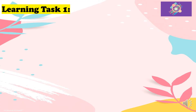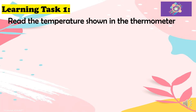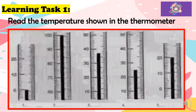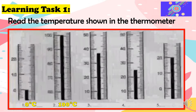For learning task 1, read the temperature shown in each thermometer. We have 5 items. For number 1, it shows 0 degrees Celsius. For number 2, the temperature is 100 degrees Celsius. For number 3, the temperature is 37 degrees Celsius. For number 4, the temperature is 25 degrees Celsius. And for number 5, the temperature is 20 degrees Celsius.